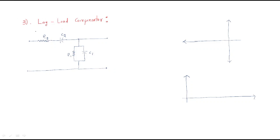In this session, the next compensator is the lag-lead compensator. In the last session we already discussed the lag compensator and the lead compensator. When both are combined together, it is called the lag-lead compensator — lag is the first term and lead is the second. The circuit construction uses resistors and capacitors: where they are in series it works as the lag section, and where one resistor and one capacitor are connected in parallel it works as the lead section.